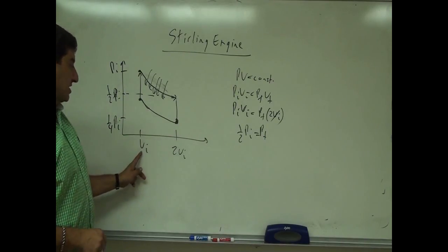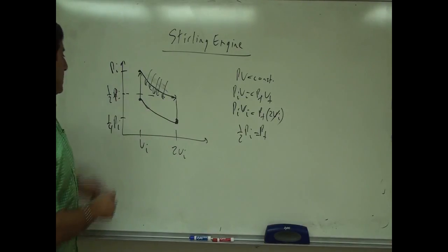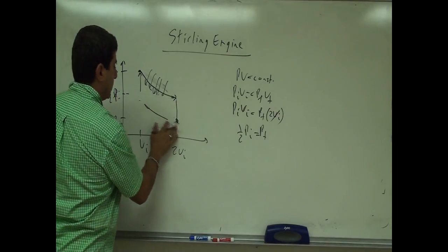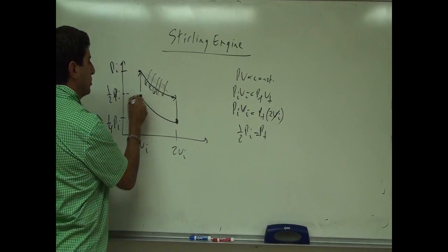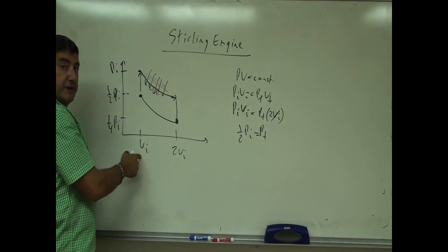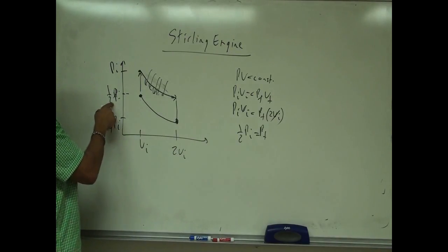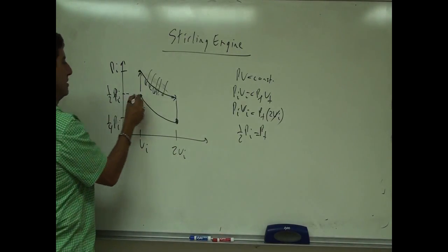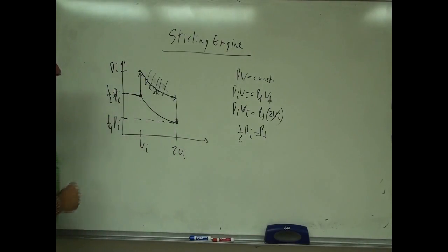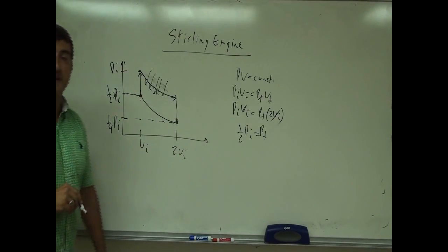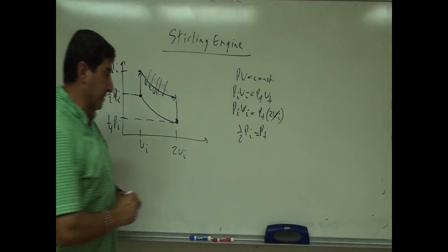If I decrease the volume by half, the pressure is going to double, so then I go back up here. It basically looks like this — going all the way to the same pressure. Because I'm going half the volume, I double the pressure, and when I double this pressure I get back to half P_initial. So now let's find the area under this graph.